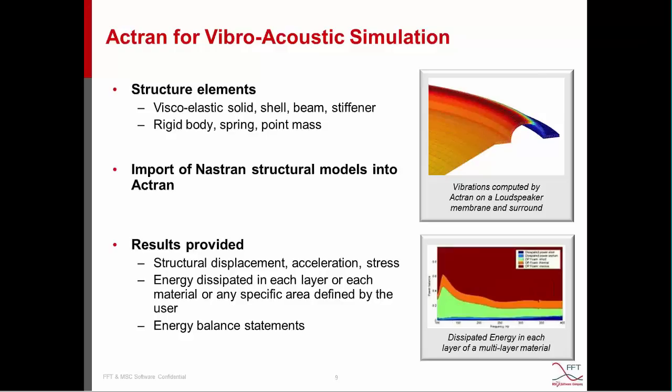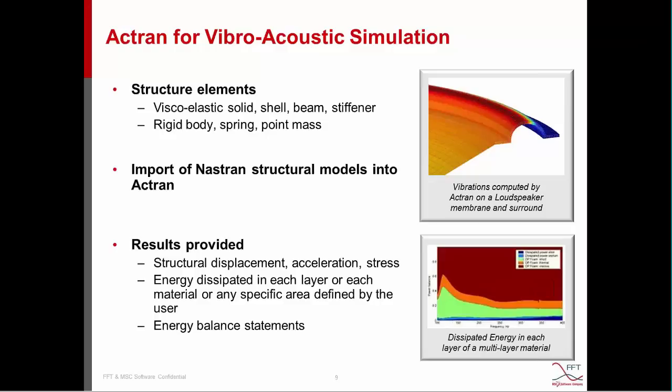Moreover, we get the energy that is dissipated in each layer or in each material or in any specific area defined by the user, allowing us to get the energy balance statement. In this kind of application we also need more complex specific models. For example, we need visco-thermal dissipation models. When we have small cavities, acoustic waves are locally slowed down and damped out. This happens in headsets or in loudspeakers — for example, between the voice coil and the magnet, where we have very thin slits and a strong effect of visco-thermal dissipation.